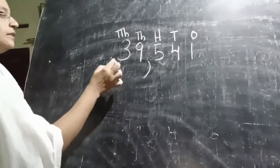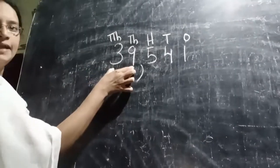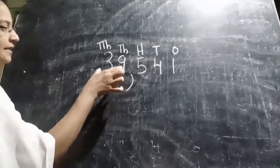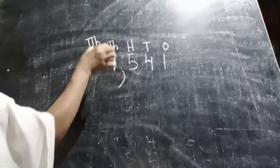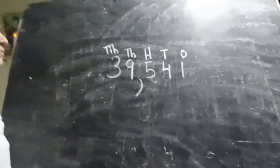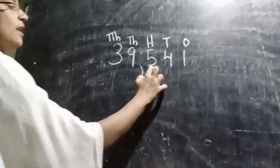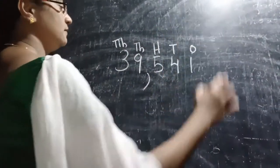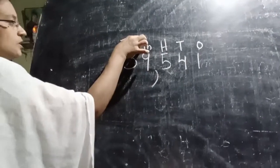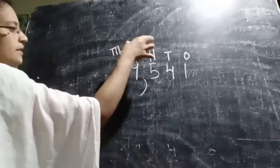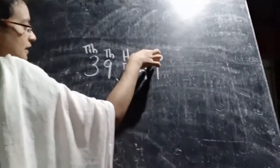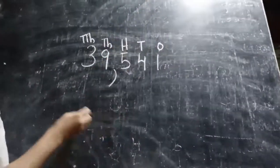So we read this number as: three and nine give thirty-nine in the thousands period — thirty-nine thousand. The ones period gives five hundred and forty-one. The number is thirty-nine thousand, five hundred and forty-one.